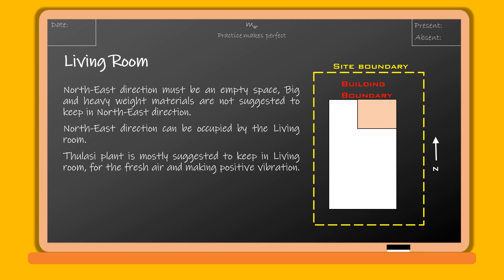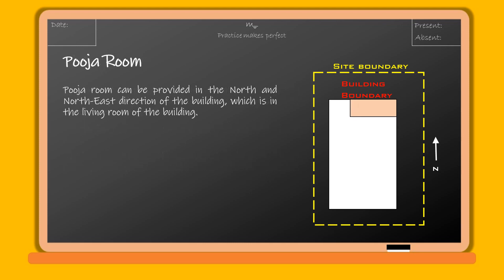A peace plant is mostly suggested to keep in the living room for fresh air and positive vibration. The puja room can be provided in the north and northeast direction of the building, which is mostly located near the living room.